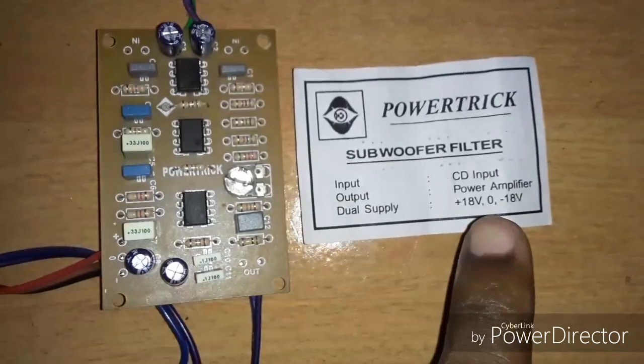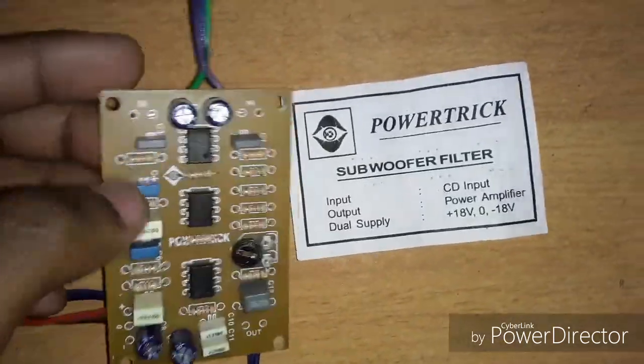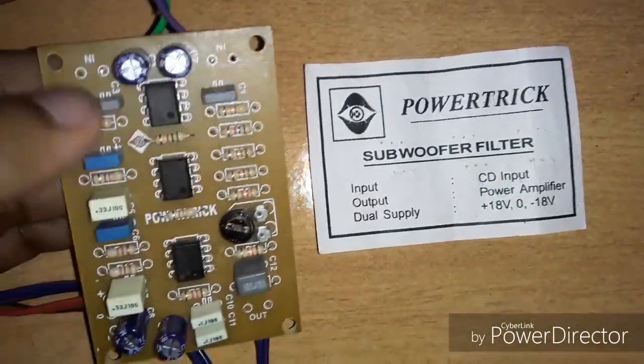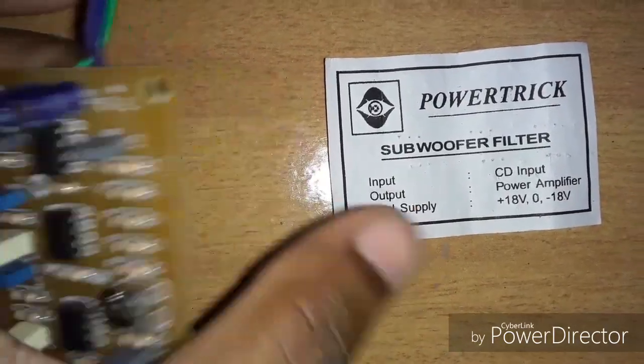The input is the CD input. There is a stereo input. This is the input in the two channels. This is the input.